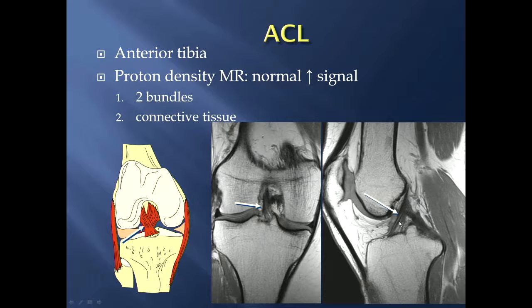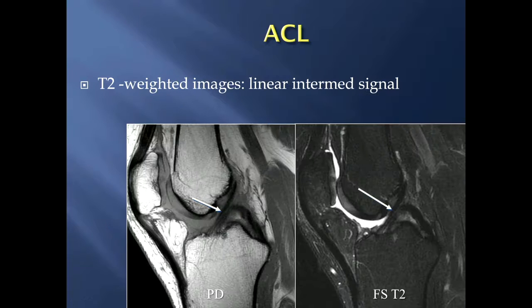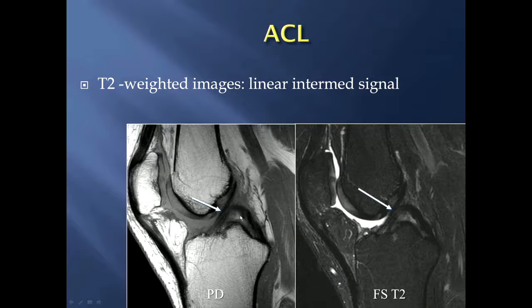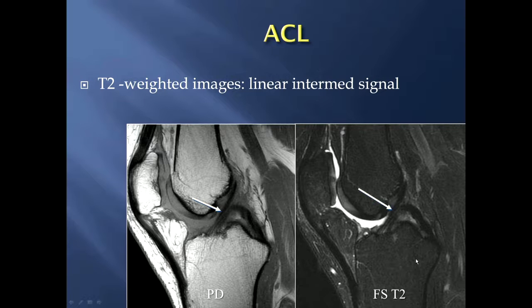One reason is that there are two bundles of the ACL, and you can kind of appreciate that appearance here. If you look at T2-weighted MR images, that signal darkens a bit but is still intermediate signal. Here's a different patient — a proton density-weighted sagittal MR image and the T2-weighted — and you can still see a little bit of the striations in a normal anterior cruciate ligament.